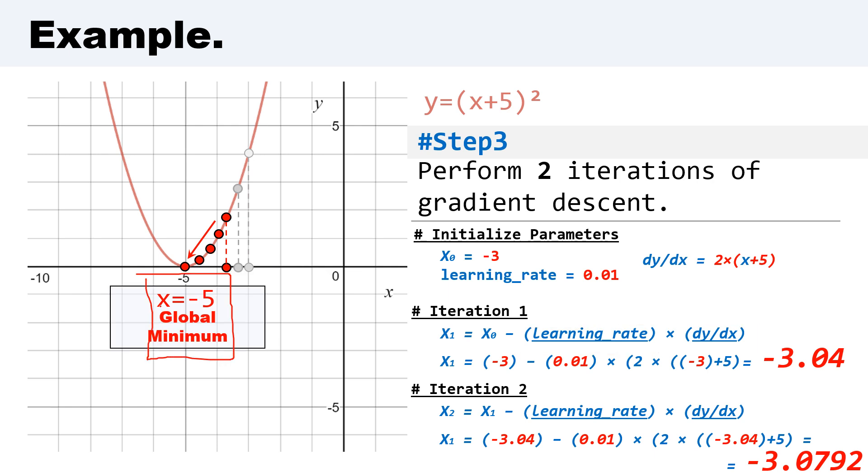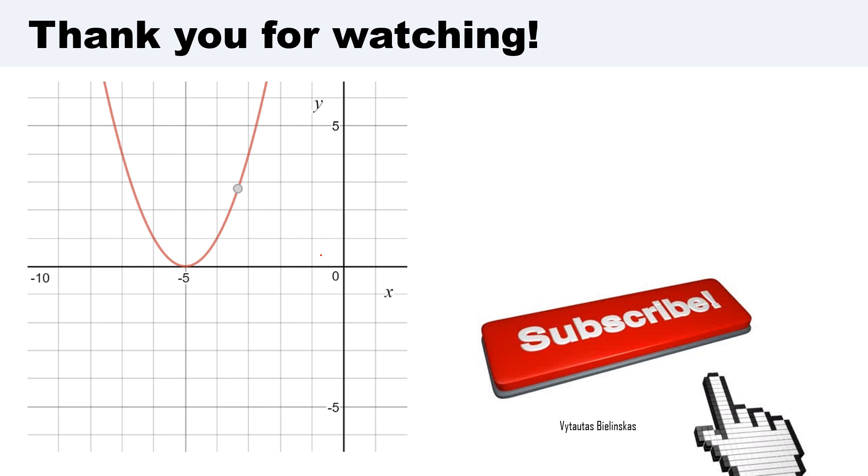In this example, we have a global minimum at x equal to -5. Thank you for watching this video. I hope that it is useful for deep learning beginners and a good reminder for experts. See you on the next video.